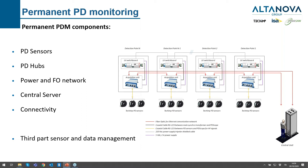The components of permanent monitoring are: the sensor, where the analog signal is picked up from the asset; the PD acquisition unit, which takes the analog signal and digitizes it; the power and fiber optic network — power energizes the monitoring, and fiber optic takes the digital signal from the acquisition unit to the central server. In the central server, all data elaboration occurs, with connectivity to internet, local SCADA, and so on.